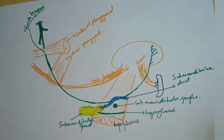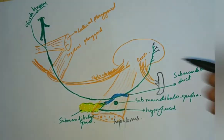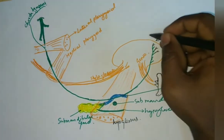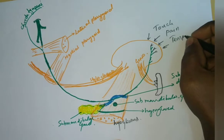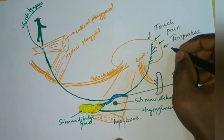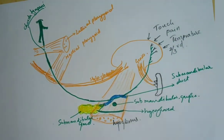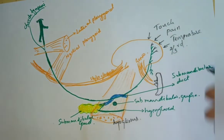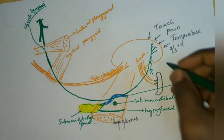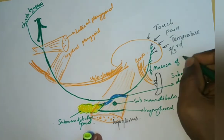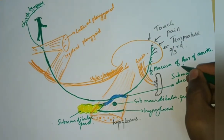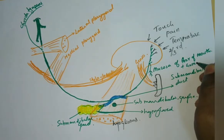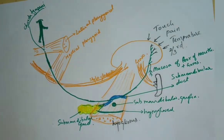Now coming to the area supplied by this nerve: it carries touch, pain, and temperature — general sensation — from the anterior two-thirds of the tongue. Its terminal branches also supply the mucosa at the floor of the mouth on the anterior aspect, and the gums related to the lower jaw.